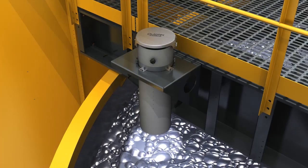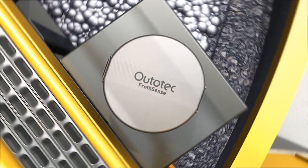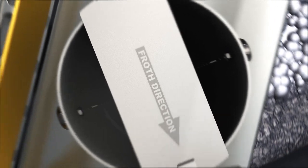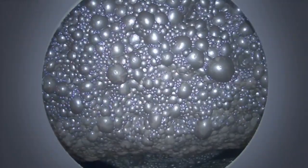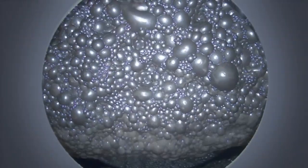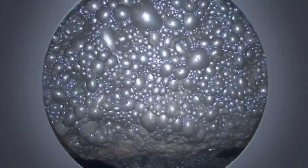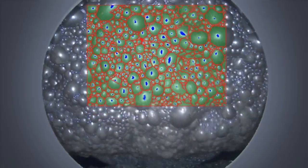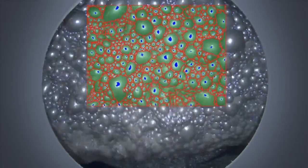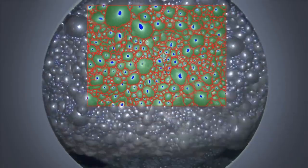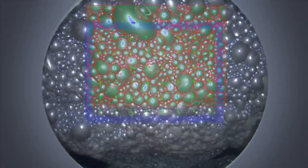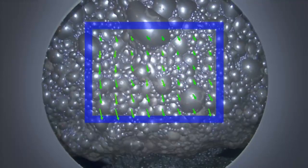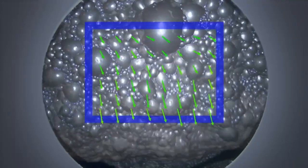The FrothSense system is based on state-of-the-art algorithms. The system swiftly analyzes the high quality image data and determines critical information, such as froth speed, bubble size, color and stability.